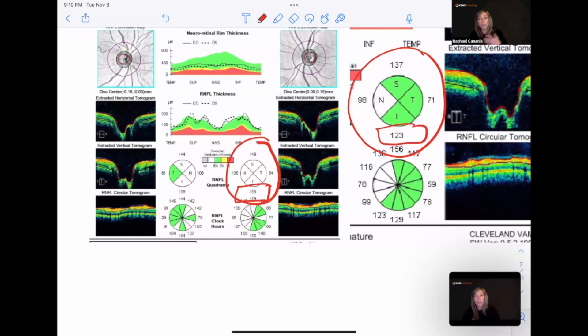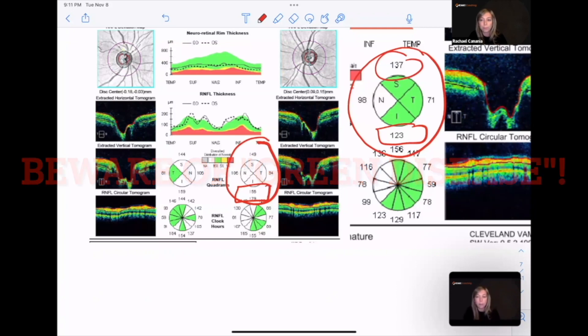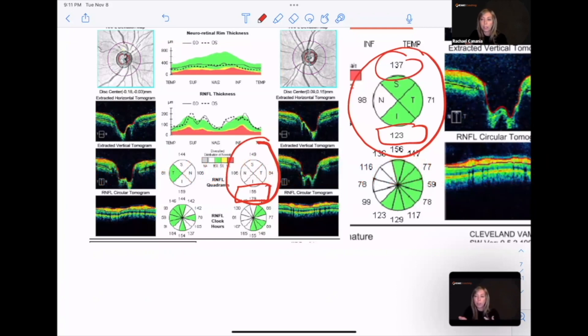He used to have a really robust nerve fiber layer. Now it's still green but it's down over 20 microns, which is still not good. Even the superior quadrant is coming down as well. This can be really tricky, definitely looking like glaucoma in the left eye.